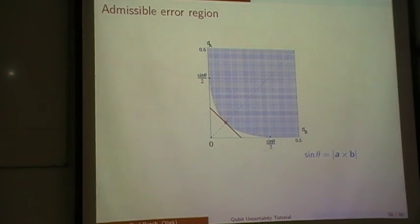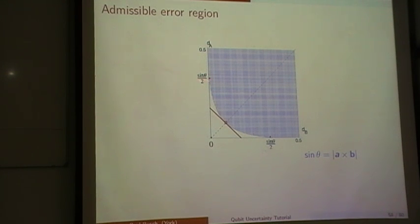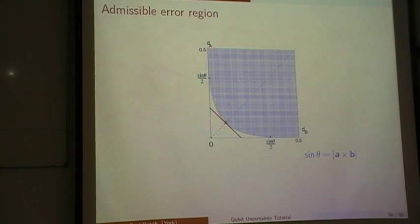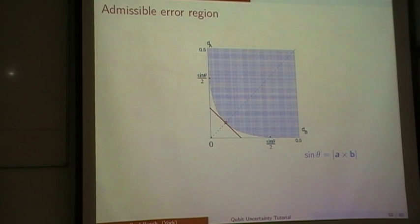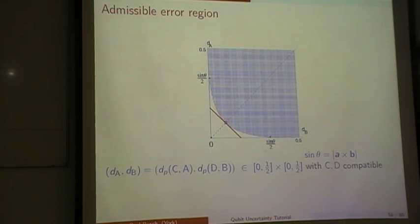Here's a picture that illustrates that. This blue shaded area is the allowed region where each point has coordinates DB and DA. If one error is zero, the other has to be maximally large — sin theta over 2 — where theta is the angle between A and B. I'm concerned with characterizing the straight line that touches the actual boundary curve, which would give us a simple form of error trade-off relation.